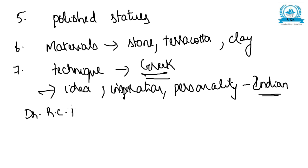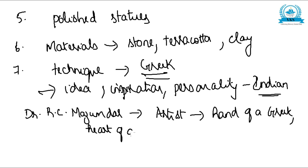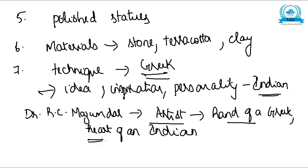As a conclusion, according to Dr. R.C. Majumdar, the Gandhara artist had the hand of a Greek and the heart of an Indian. This echoes our seventh point — the technique was Greek, meaning the artist had the hand of a Greek, but the idea, inspiration, and personality were Indian, meaning they had the heart of an Indian.